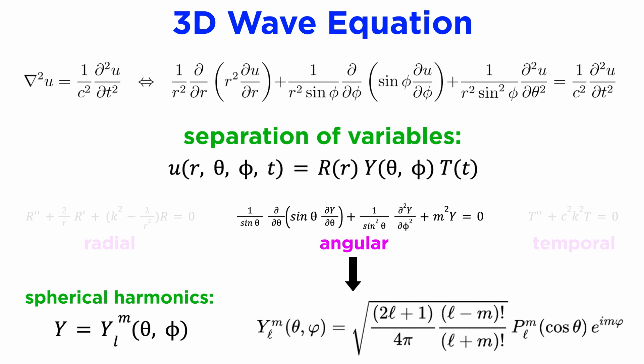We're skipping over quite a lot of the algebra here, but the solution turns out to be something called the spherical harmonics, denoted YLM of theta phi, which themselves are defined in terms of another special function called the associated Legendre polynomials.